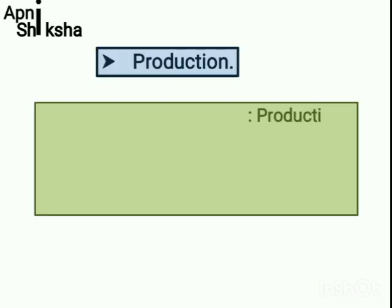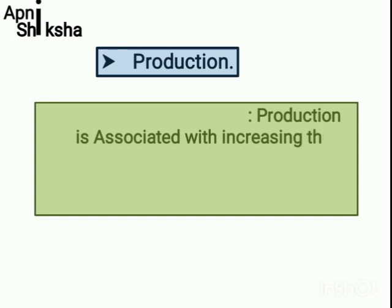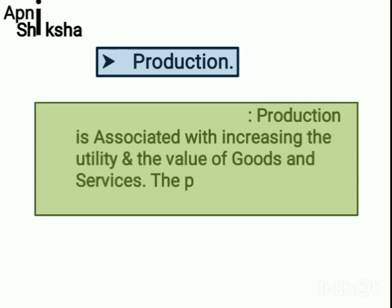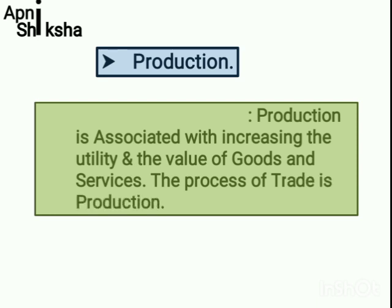Second is Production, which is associated with increasing the utility and value of goods and services. Production levels can vary, and the consumption of goods and services may be higher or lower depending on production.